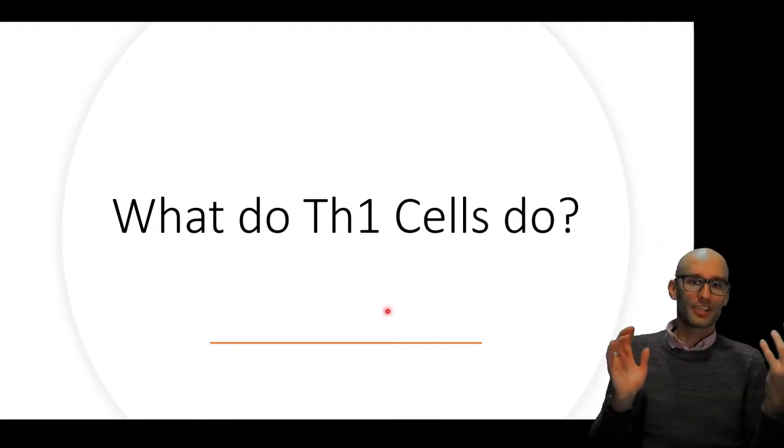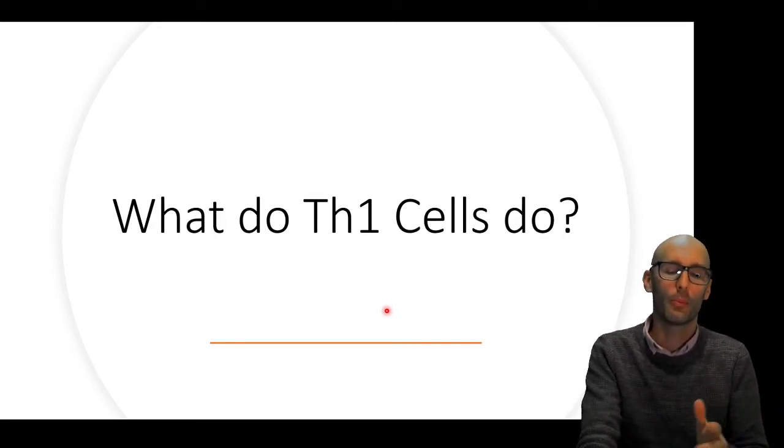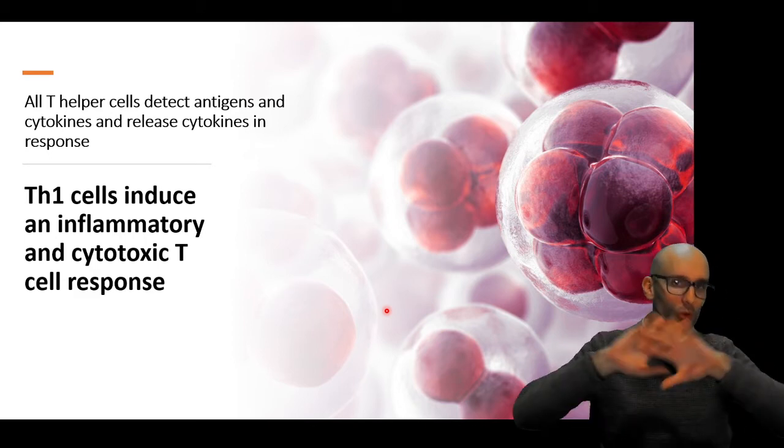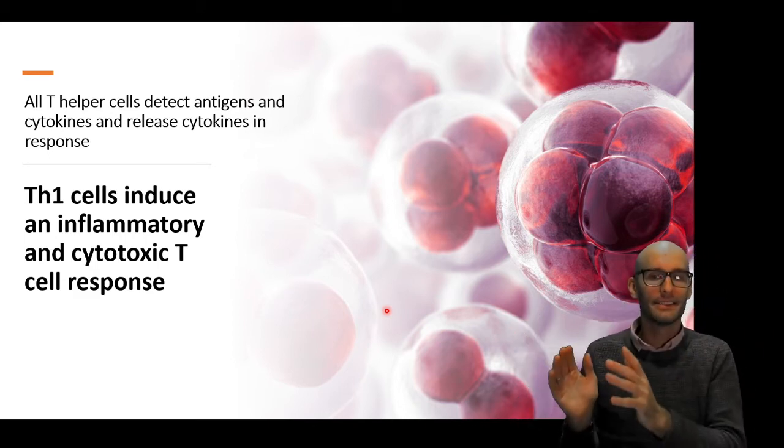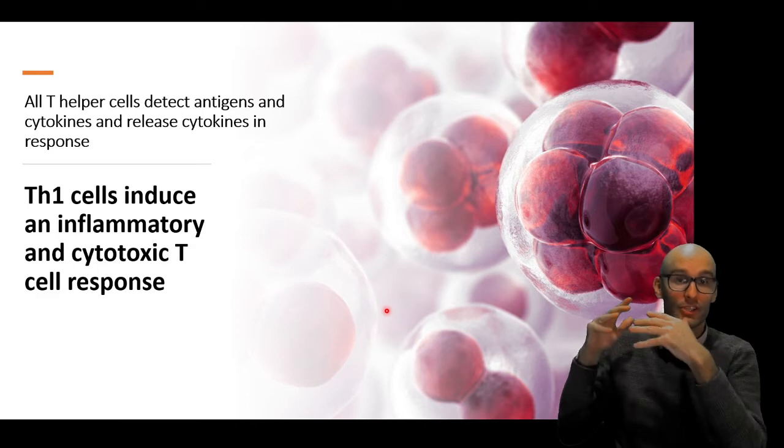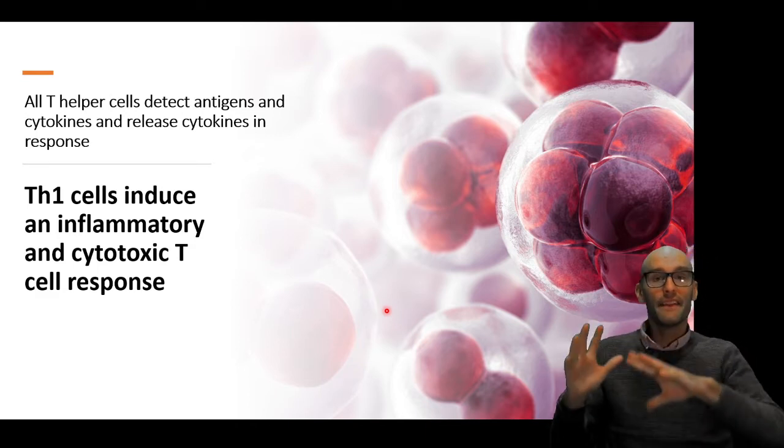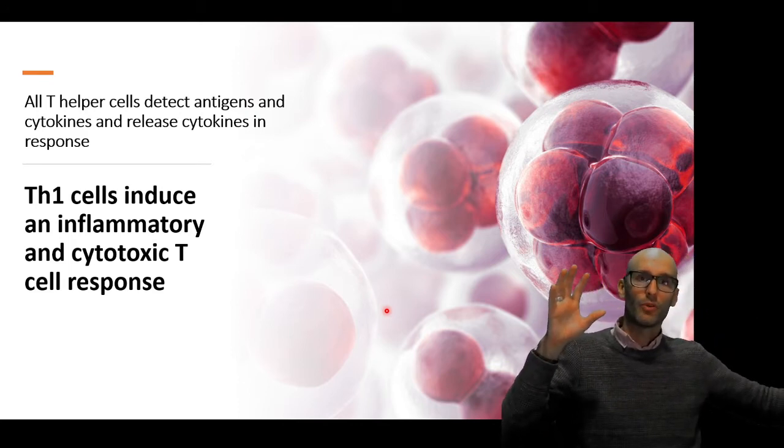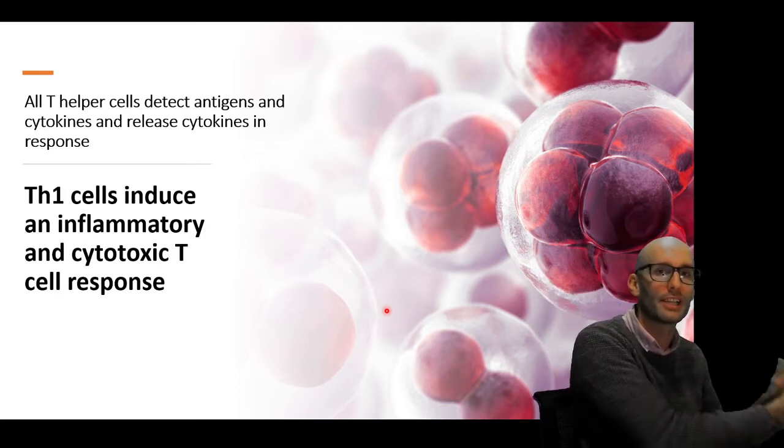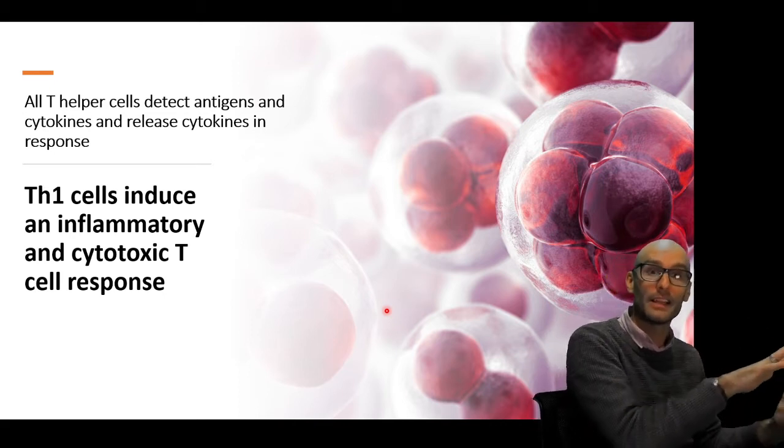So now we're going to look at the Th1 subcategory. So that's a T helper cell type 1 subcategory. So the first question, and the best place to start with is what do they actually do? What do T helper cells do? So all T helper cells do is they detect antigens and cytokines. So they're responding to antigens and cytokines that have been secreted that they are now detecting with receptors on their cell surface.